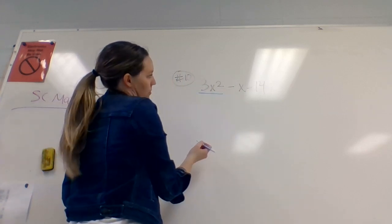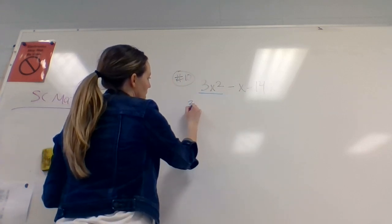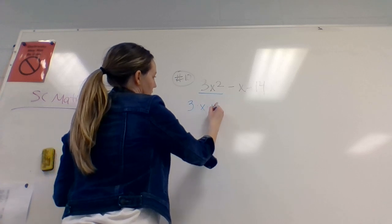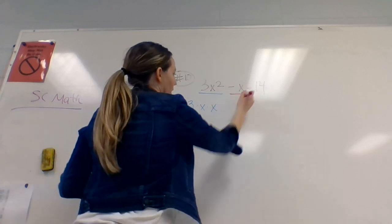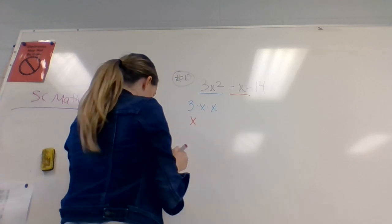So I'm going to break down 3x squared first. So I'm going to do 3 times x times x. I'm going to break down this x here. All I have is x.